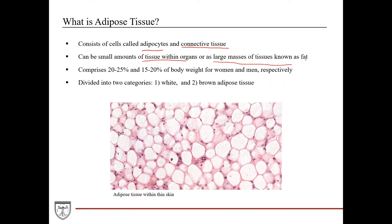When people talk about losing fat, they're talking about losing adipose tissue. It comprises about 20 to 25 percent of body weight in women, and 15 to 20 percent in men. It's divided into two categories: white adipose tissue and brown adipose tissue, based mainly on histological appearance but also on function. This is a great example of adipose tissue filled with adipocytes — this is white adipose tissue, and these white or clear inclusions are all components of an adipocyte.